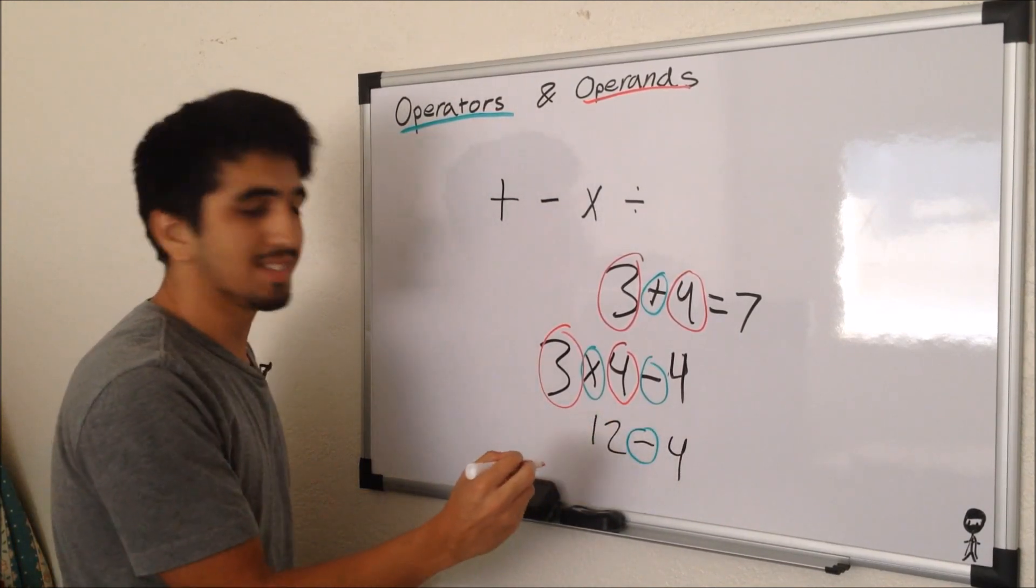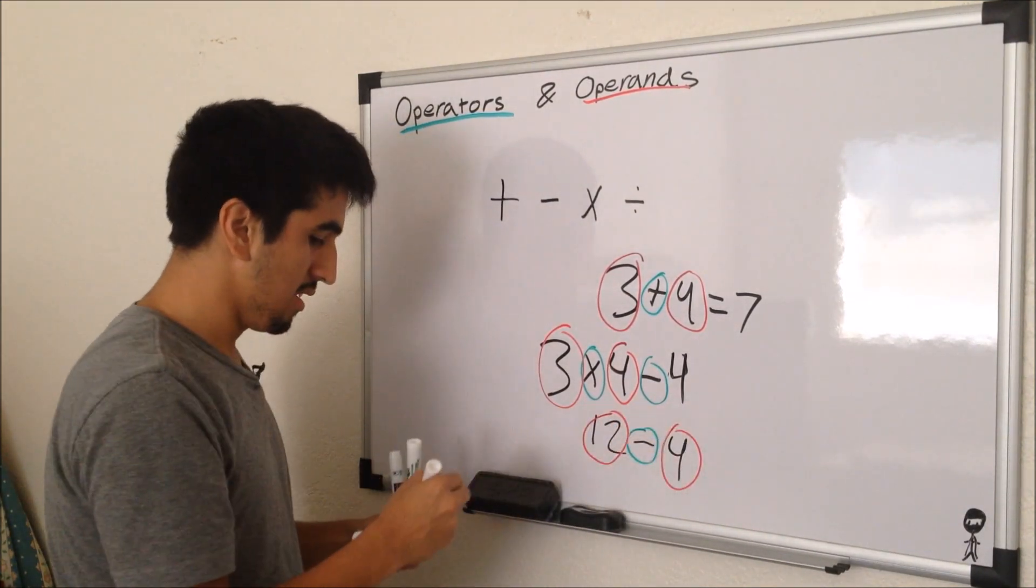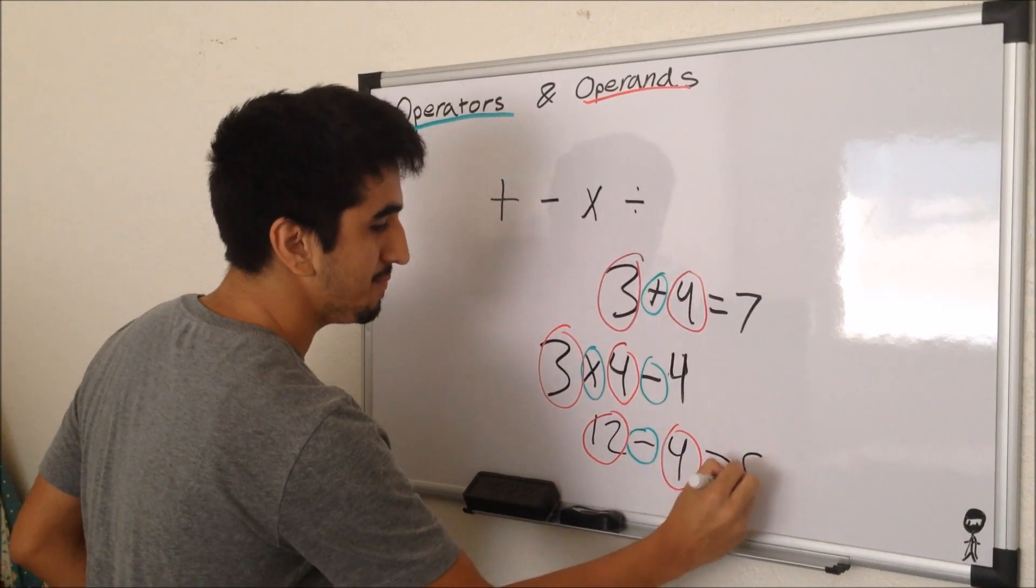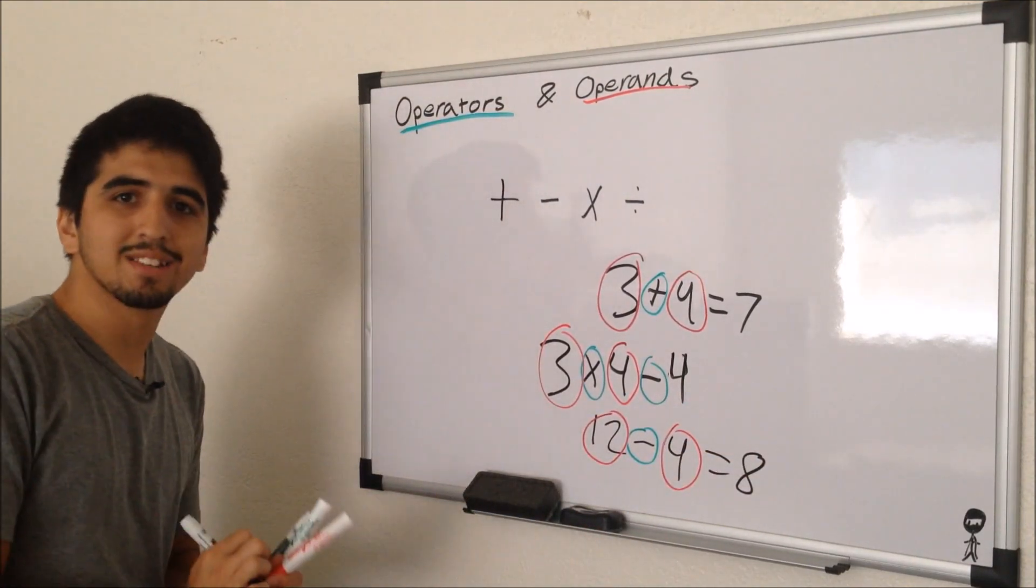And now our operator is a minus sign still, and we have our two operands, 12 and 4, and that will give us 8.